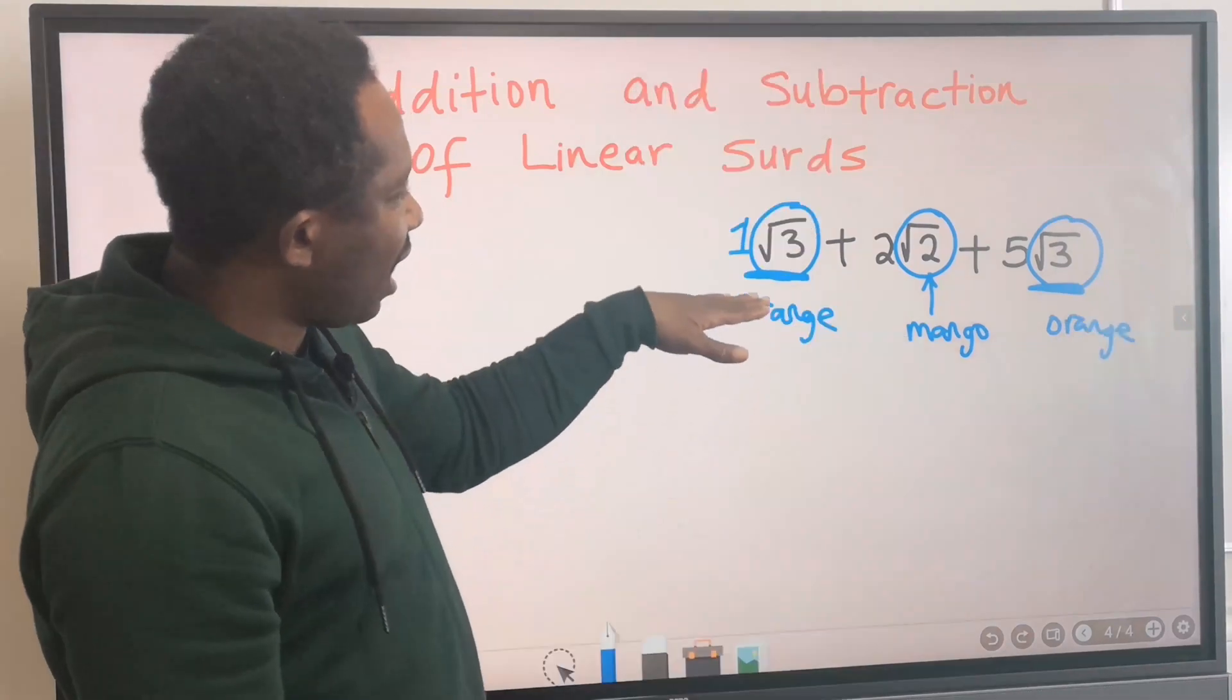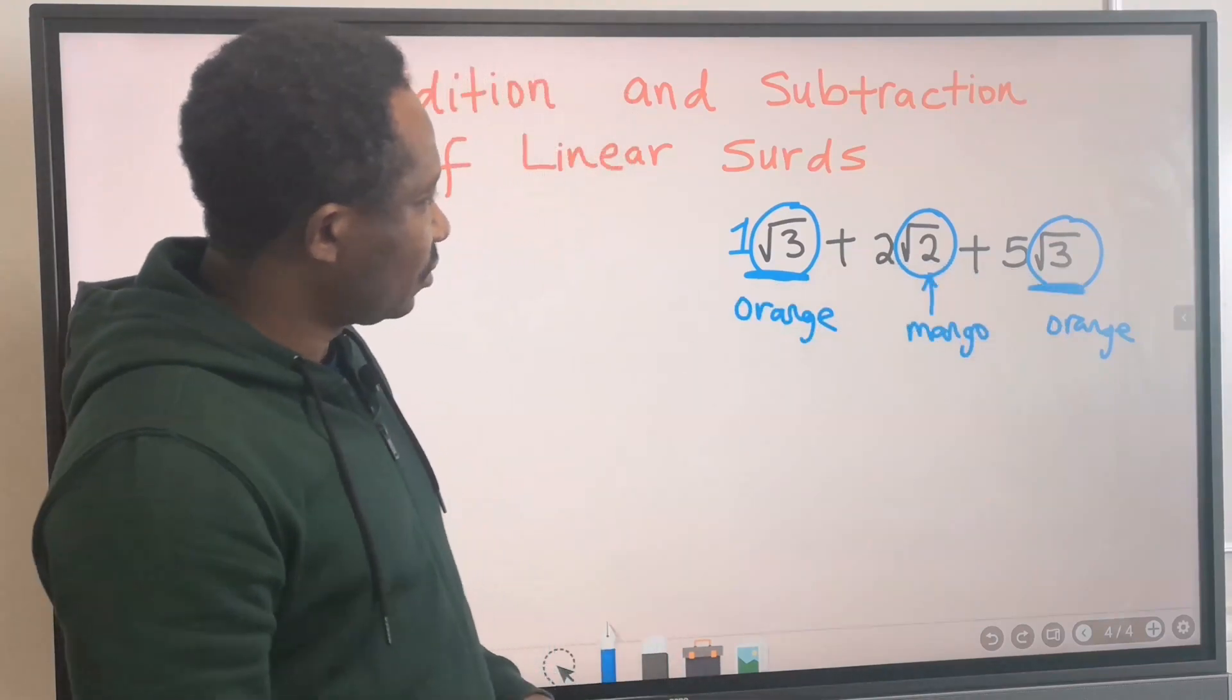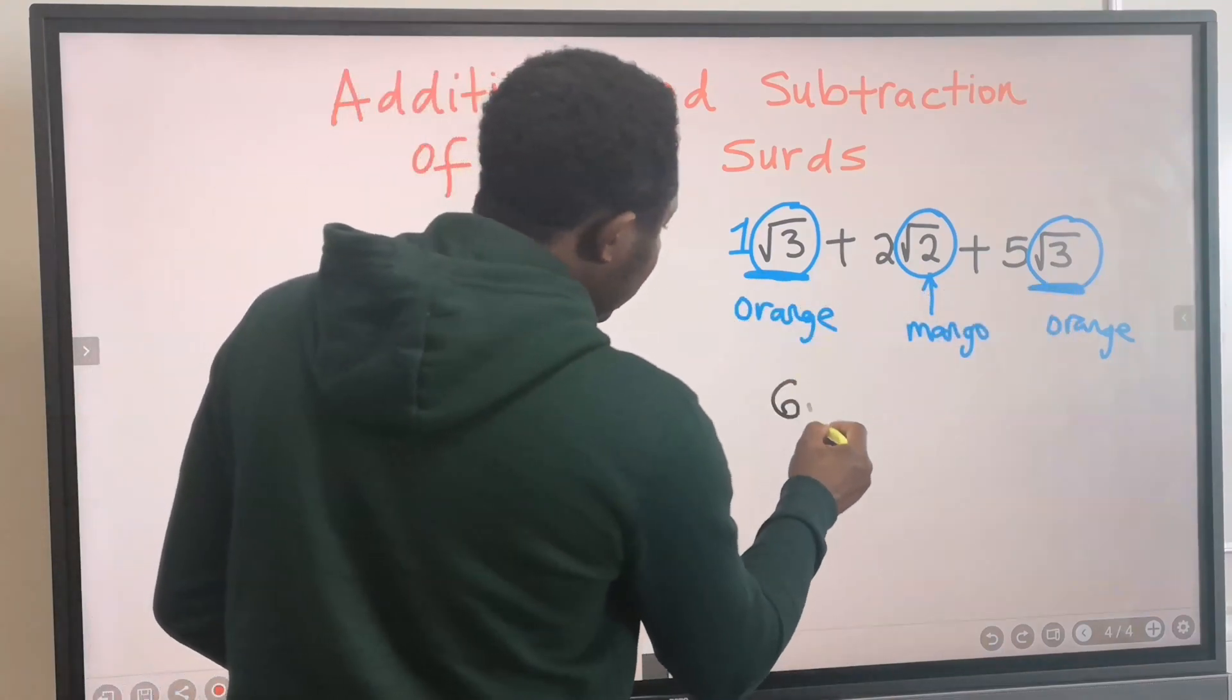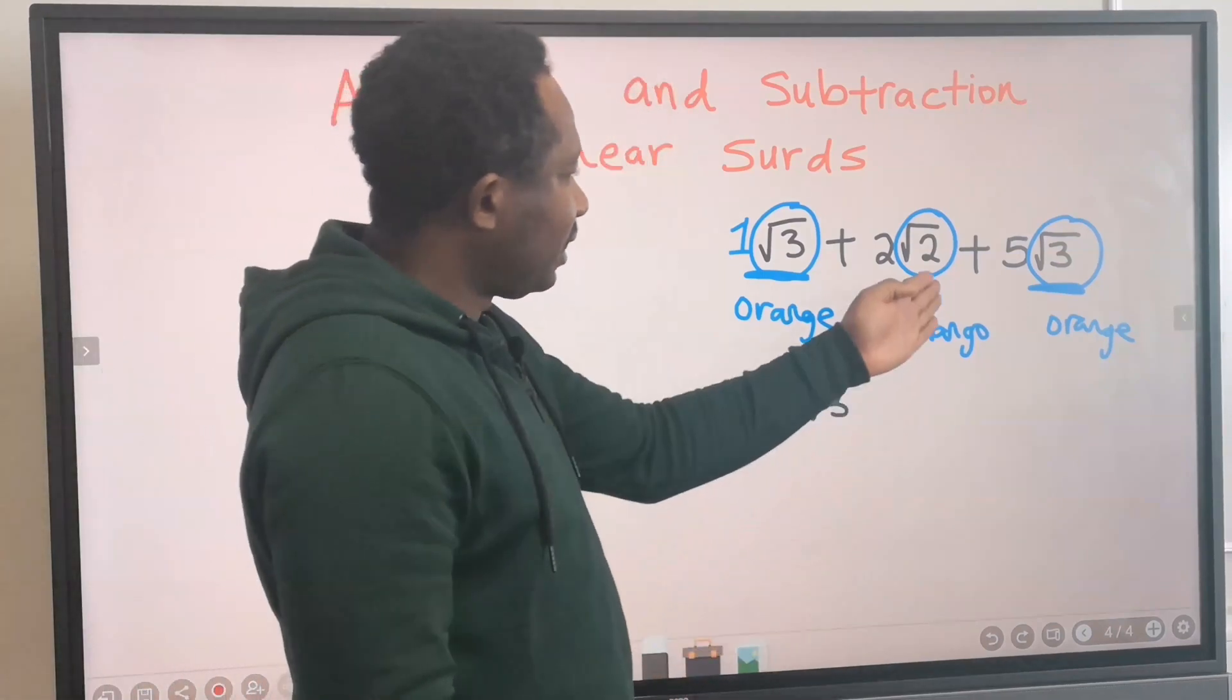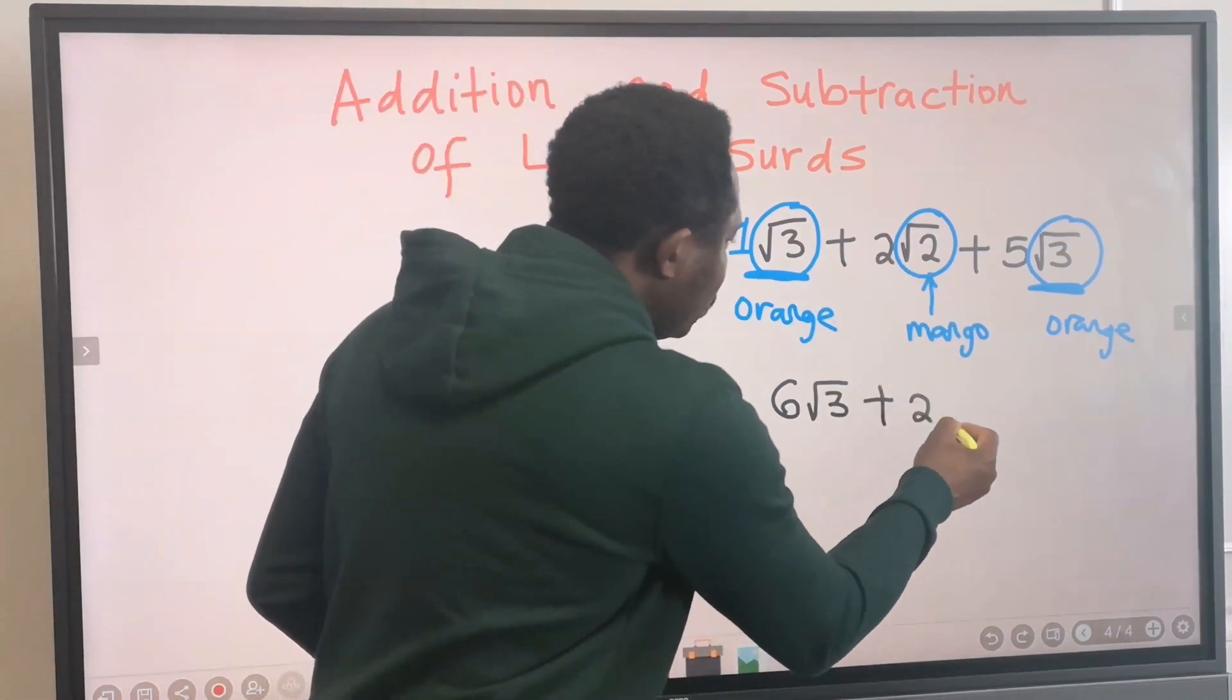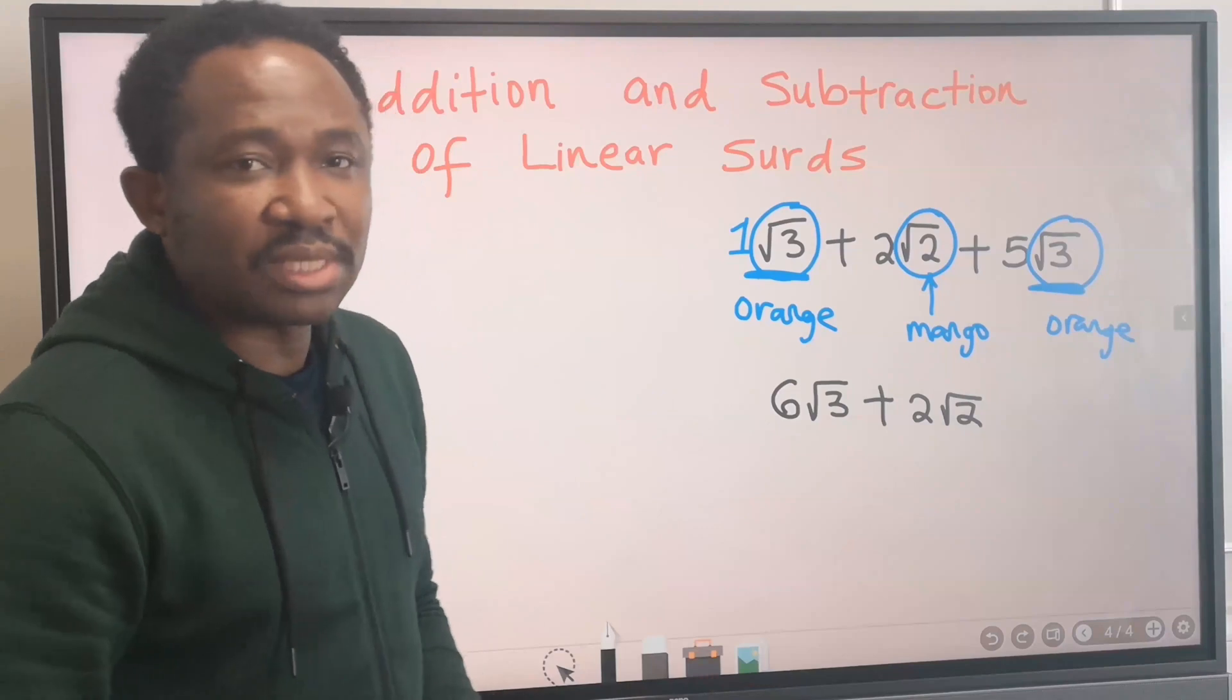We are going to have 1 orange plus 5 oranges. If we add this and this together, we are going to get 6 oranges. However, this is 2 mangoes. And we can't add these 2 mangoes to the oranges. And this becomes our answer. We can't do anything further with it.